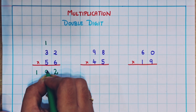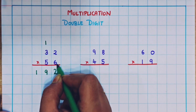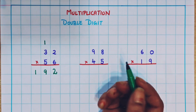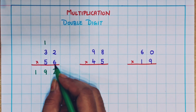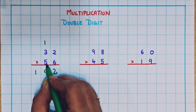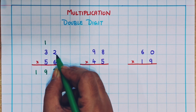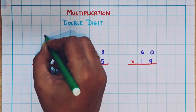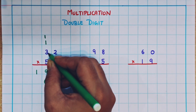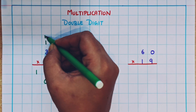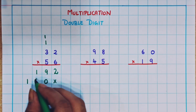So the first multiplication is done using the number in the ones place. Now I'm going to put a cross mark here. Now I'll do the multiplication using the number in the tens place. 5 twos are 10, so 1 I'll write as a carryover and 0 I will write here. Now 5 threes are 15, plus the carryover 1 is 16. So here I'll write 16.